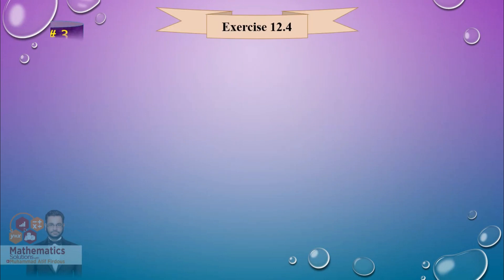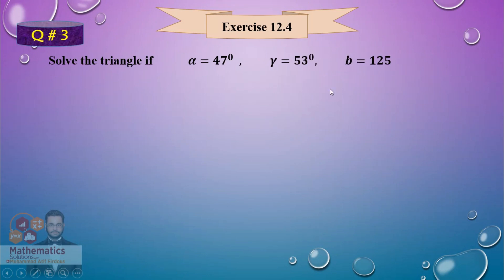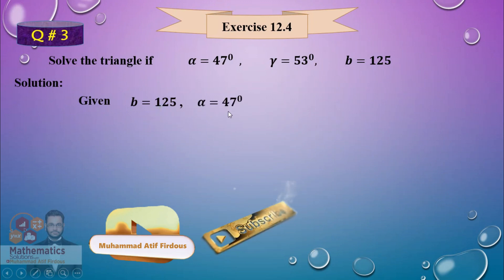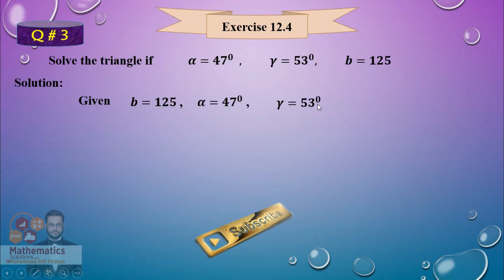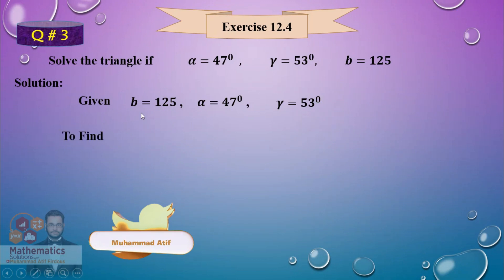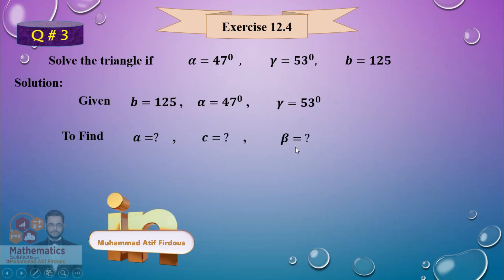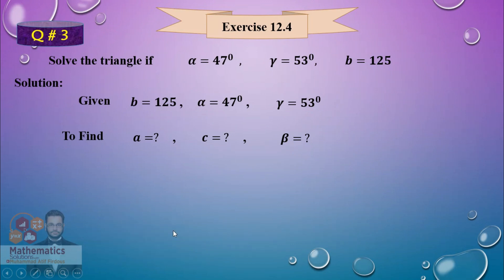This is the pattern. There are three questions. Moving on to question number 3 from the smart syllabus: alpha = 47°, gamma = 53°, and p (side b) = 125. Again, the given information is one side and two angles. We need to find side A, side C, and angle beta.